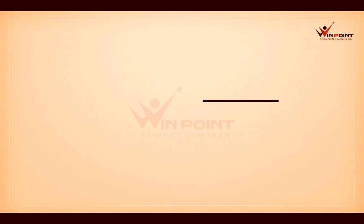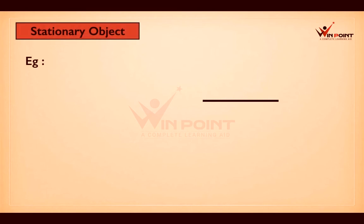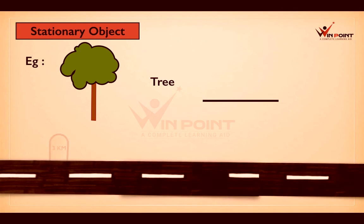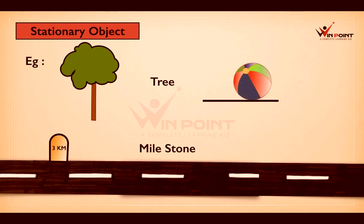Now we can discuss another example of a stationary object. The first one is a tree. Trees are not moving; they are always at rest and always have the same position. Next is a milestone — milestones on the side of the road are not going to move; only vehicles are going to move. Next is a ball at rest — a ball which is not moving is also an example of a stationary object.